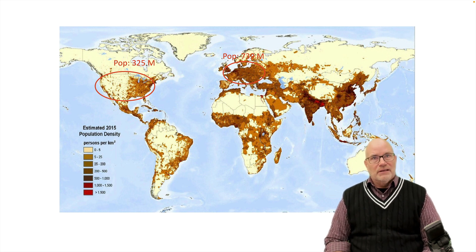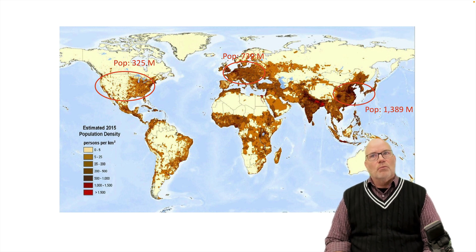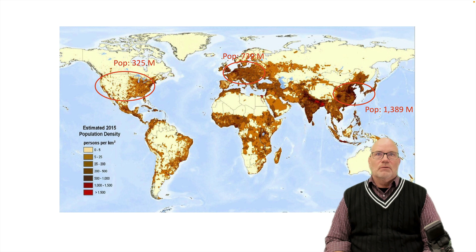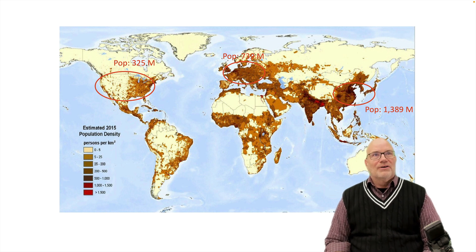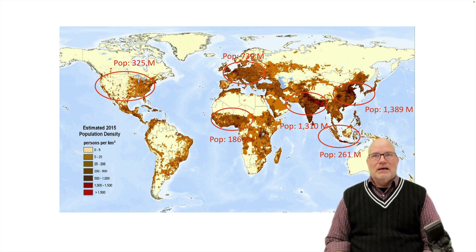739 million in Europe, which would be the developed world. So looking at those, there's about 1 billion people in the developed world. China has 1.3 billion — these numbers vary a bit from the previous slide, which includes more up-to-date numbers. Then we have India at 1.3 billion, Indonesia at 261 million, and Africa at 186 million people.